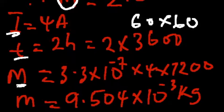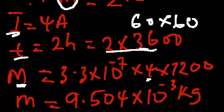So our M automatically becomes 3.3 times 10 raised to the power minus 7 multiplied by 4, which is our current, multiplied by 7200, which is the product of this.